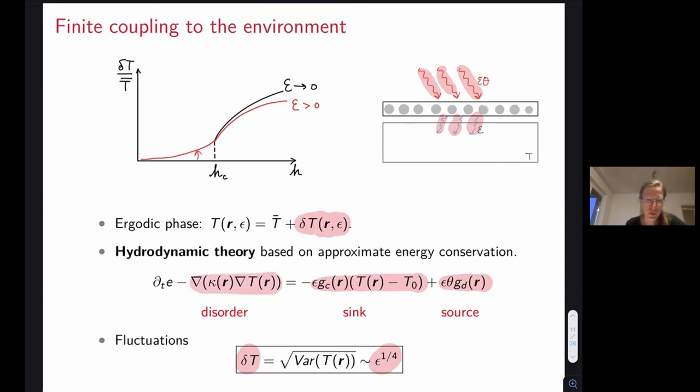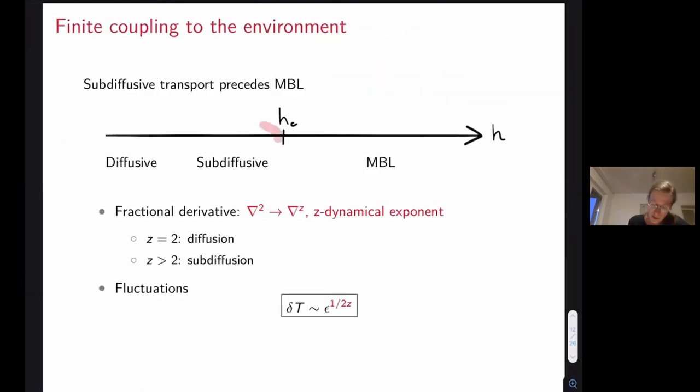But here we forgot one thing, namely we assume that the transport is diffusive, while we know that as we approach the MBL transition the system becomes subdiffusive. One heuristic way of capturing this is simply to use a fractional derivative, or maybe just to simplify it, kind of instead of two use z, which is now a dynamical exponent that equals two for diffusion and it's larger than two in case of subdiffusion.